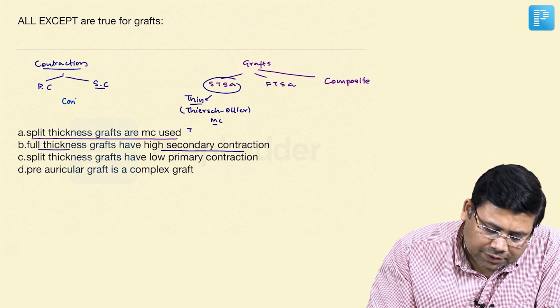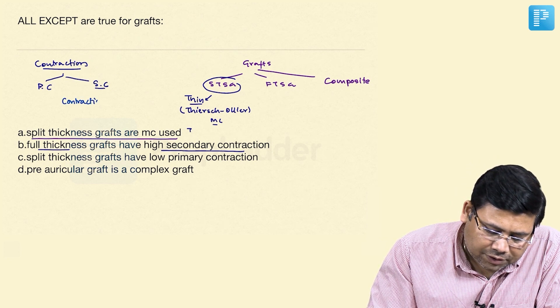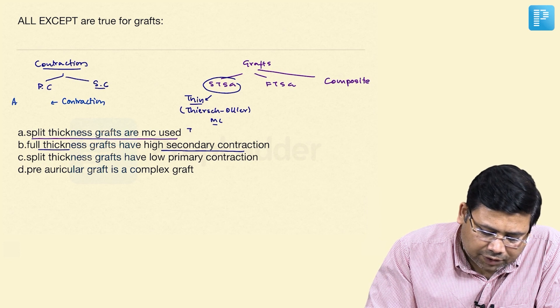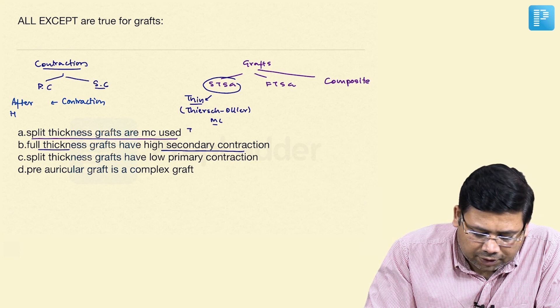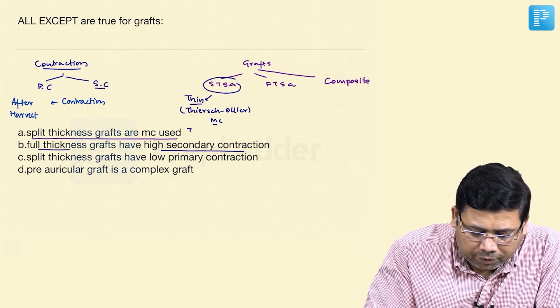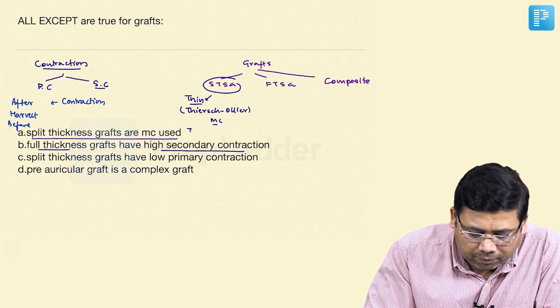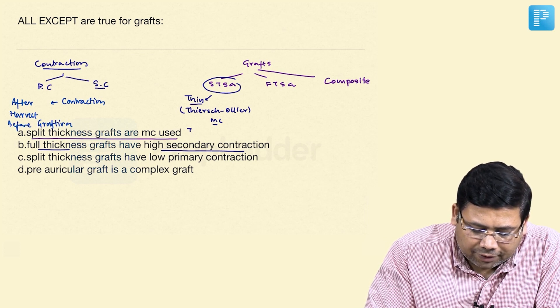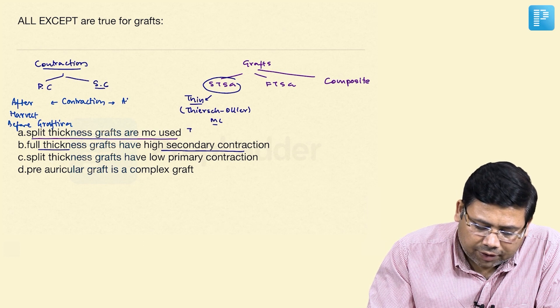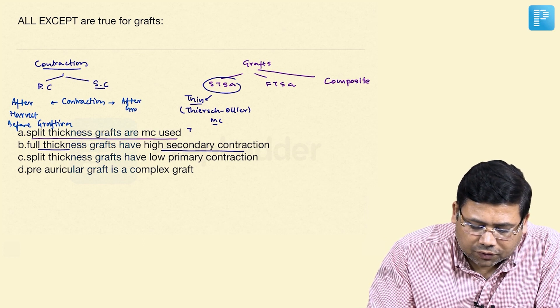What is primary contraction? This is the contraction after harvest and before grafting. When we talk about secondary contraction, this is the contraction after the process of grafting.